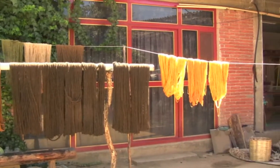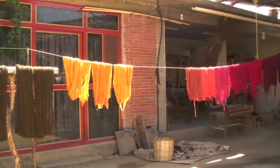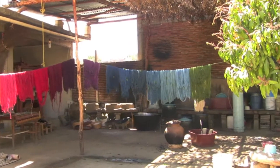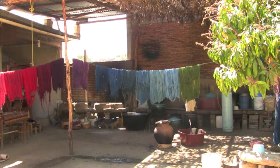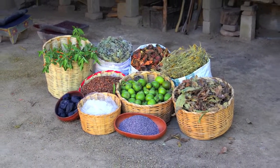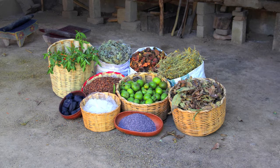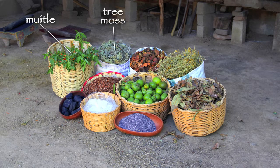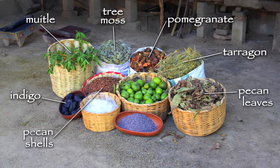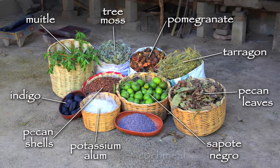For over a millennia, the Zapotec Indians of Oaxaca have used a rich palette of colors made from plants and other elements that are still found in their environment today. Examples of common natural Zapotec dye ingredients include mewitle, tree moss, pomegranate, tarragon, indigo, tecan shells and leaves, Zapote negro, alum, and cochineal.